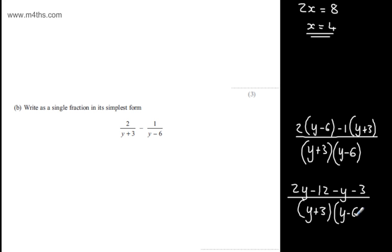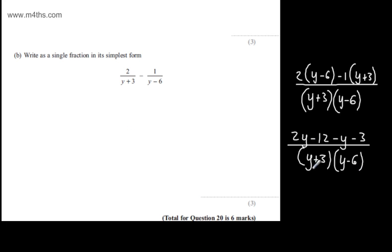And then in the denominator, I'm going to leave this like so and write this as y plus 3 multiplied by y minus 6. I can see in the numerator, 2y minus y is going to give me y and then we're going to have minus 12 minus 3 which is minus 15 over y plus 3 multiplied by y minus 6.